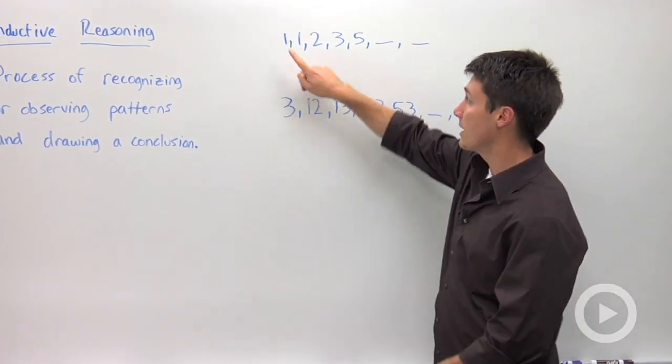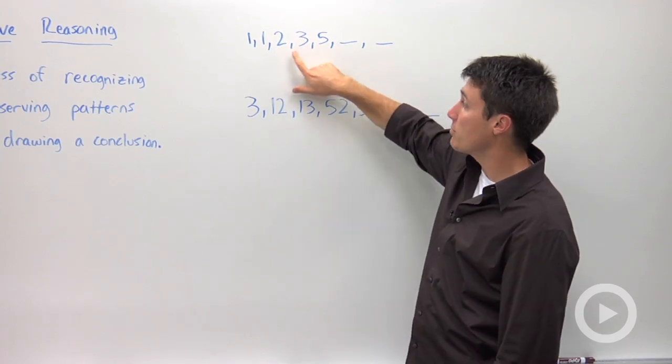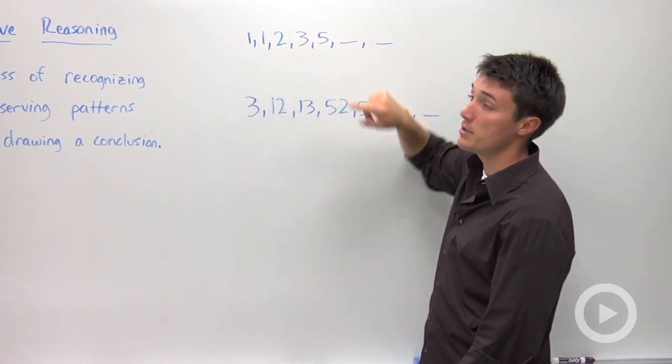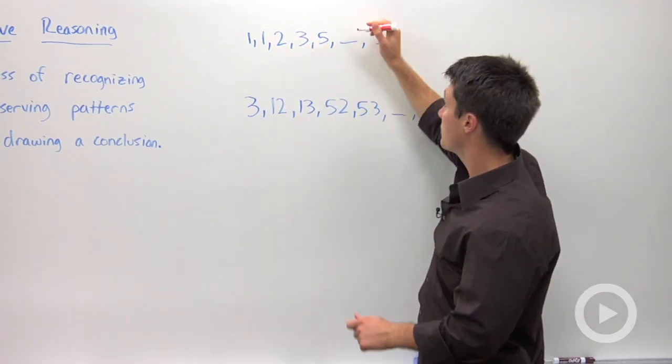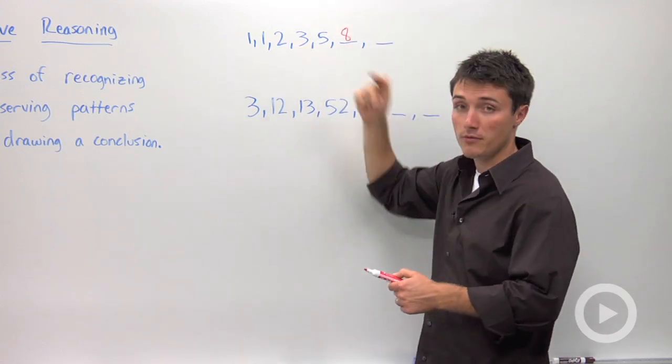The key to this sequence is to say that one plus one is two, that one plus two is three, that two plus three is five, three plus five will be your next number. So to find the next number of this sequence, you need to add up the two previous terms.